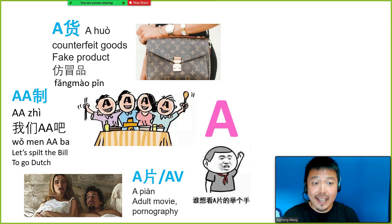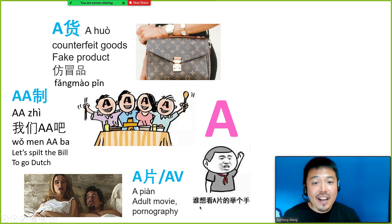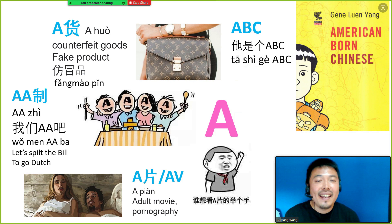The next one will be A片 (A pian), or AV, which refers to the adult movie. There's a very interesting GIF that says 谁想看A片的举个手 — for those who want to see the adult movie, please raise your hand.